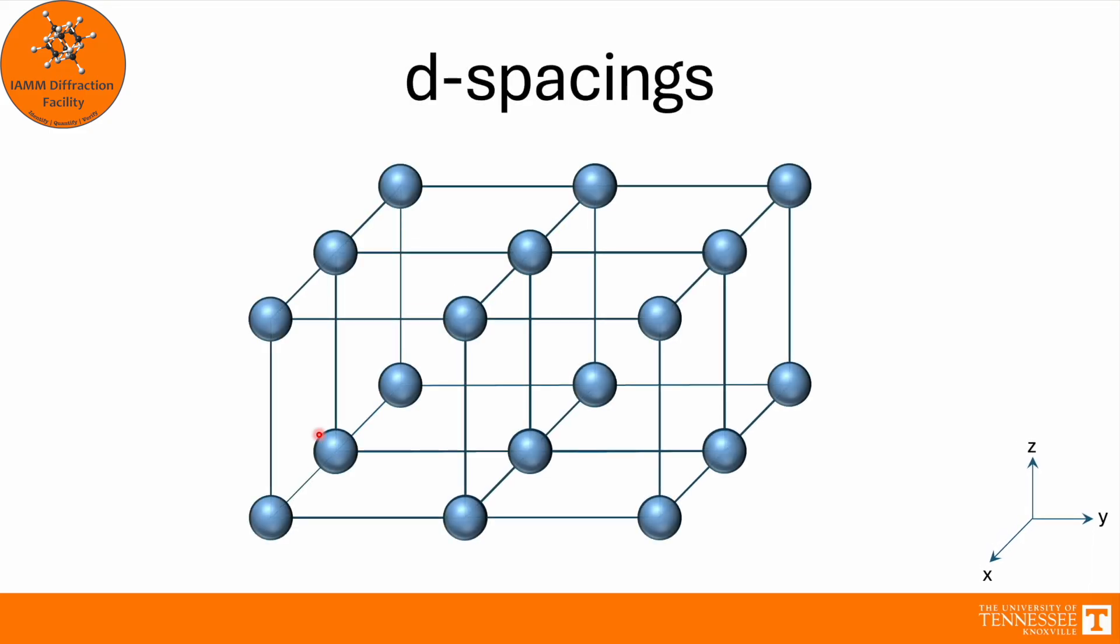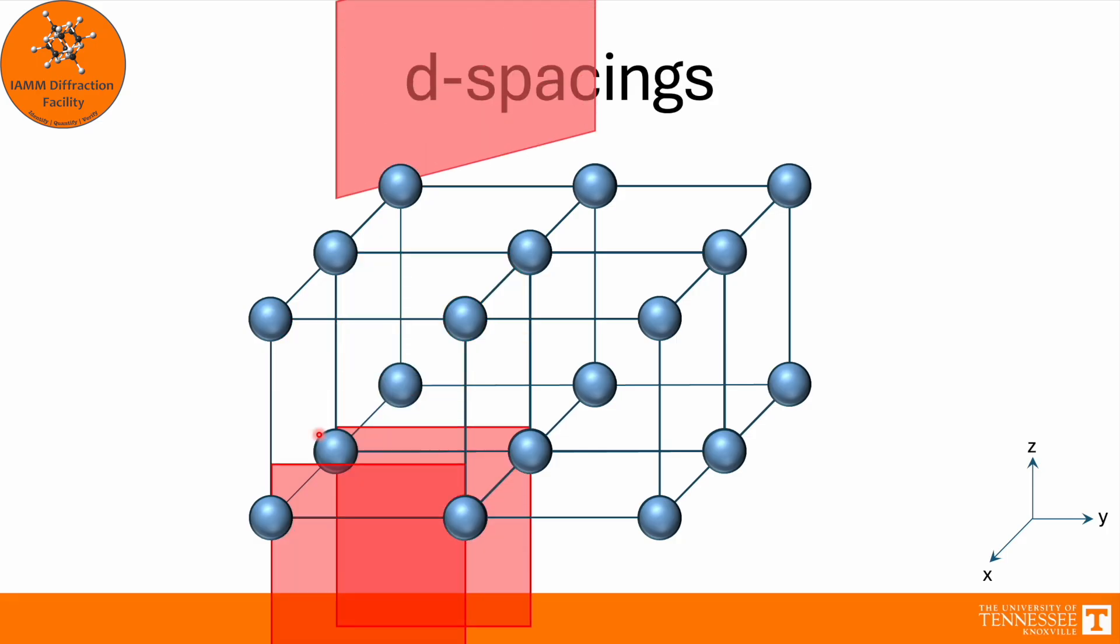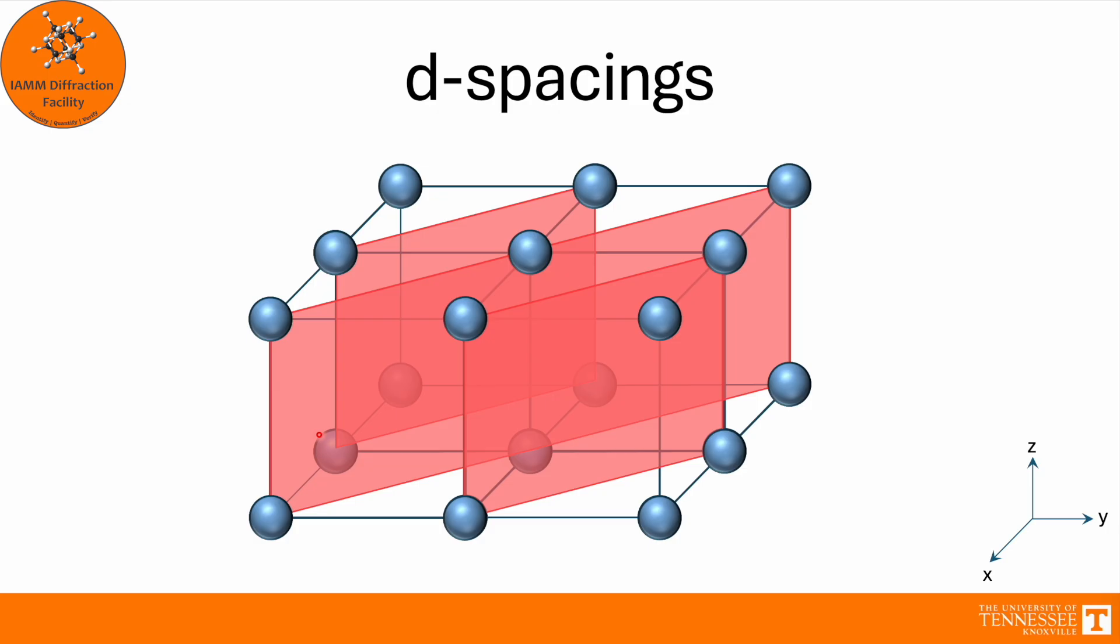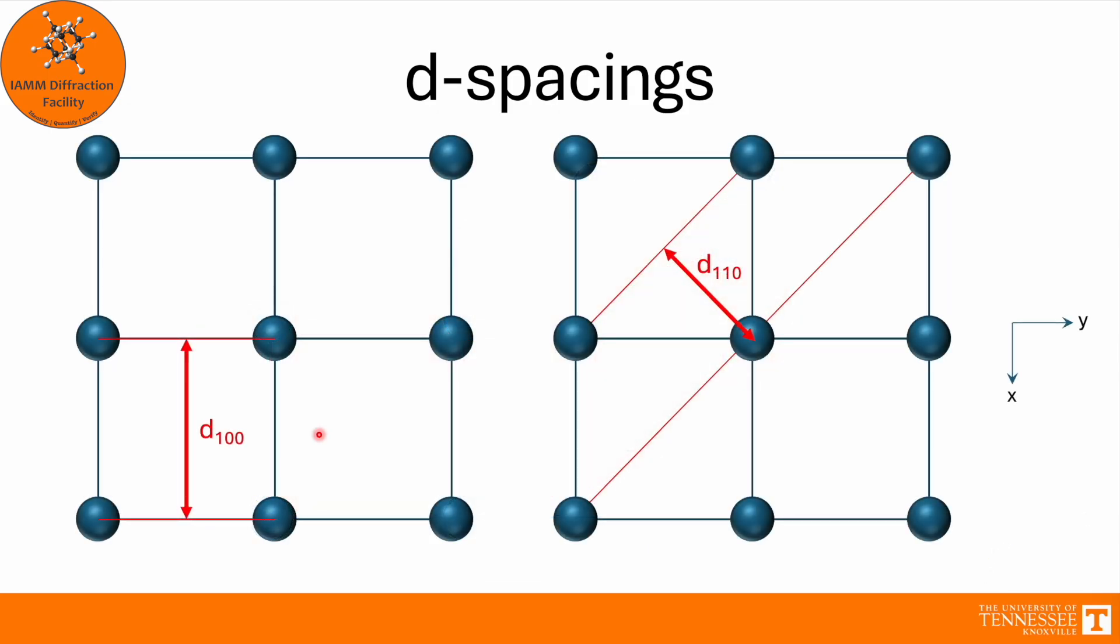We have one more feature to look at for planes in this video, and that is d-spacings. Just as a reminder, here we have some (1,0,0) planes. Here we have some (1,1,0) planes. And if we take a top-down view of these, we see the spacing from one plane type to its next nearest neighbor. Now, this distance is what we call a d-spacing. So that is the distance from one plane to the next nearest neighbor of the same type. And we see that these have different distances. And we designate it by putting a small d, and then the subscript is whatever plane we're looking at.